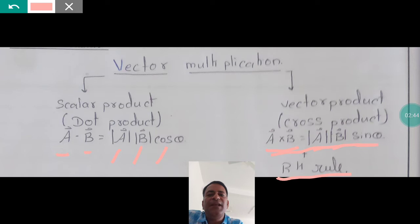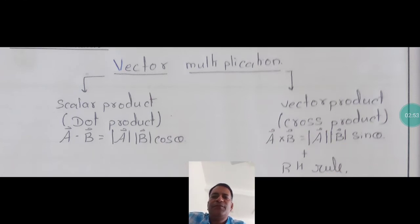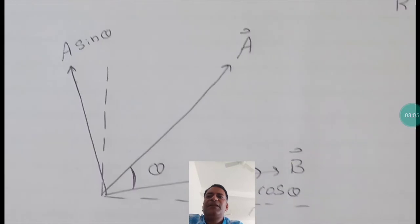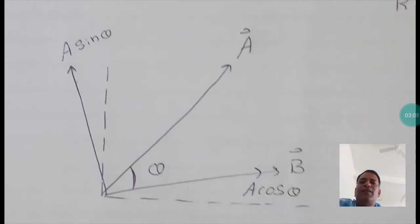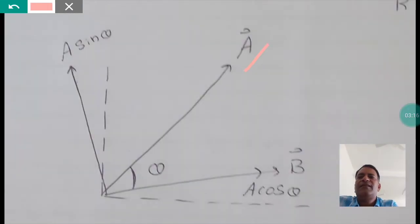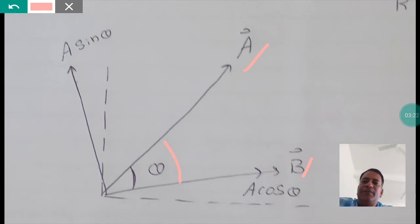Today, let us concentrate only on the scalar product. The basic formula to remember is: vector A dot vector B equals magnitude of A times magnitude of B times cos theta. Now, looking at the next slide — I have two vectors, vector A and vector B as shown on the screen. This is vector A, this is vector B, and theta is the angle between them.